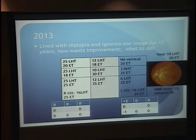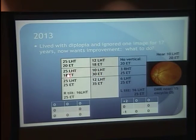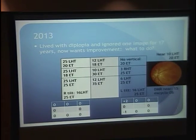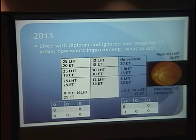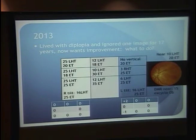She had lived with diplopia, ignored one image, had an abnormal appearance, and put up with that — but she is now interested in improvement. She still has a hypertropia, but because she hasn't been fusing, she started to develop an esotropia. There is still incomitance to the hypertropia and a V-pattern to the esotropia — a V-pattern to the horizontal deviation. She also has a large amount of excyclotorsion. This is challenging surgery for cyclovertical strabismus. We have to think in three dimensions, in different gaze positions, not just primary gaze.